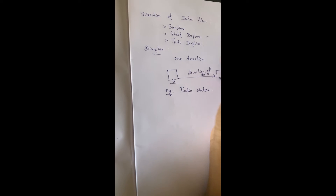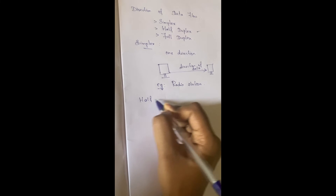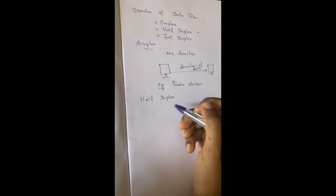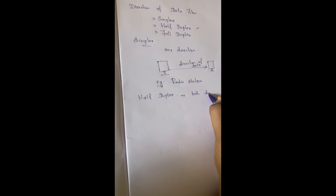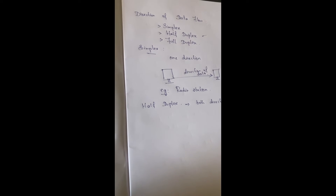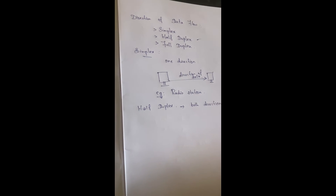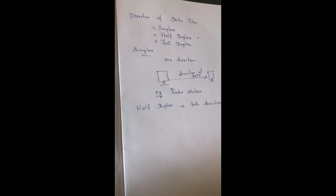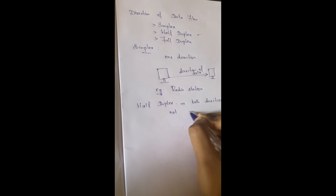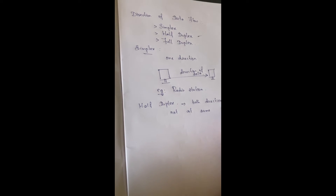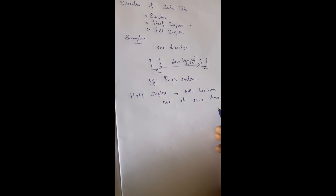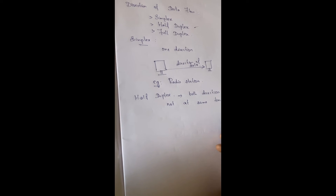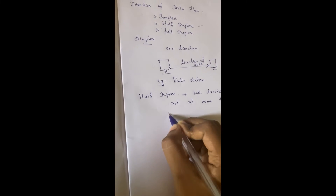Next one is half duplex. In half duplex, data can be transmitted in both directions, but it cannot transmit at the same time. The data can be transmitted in both directions but not at the same time. The example for half duplex is walkie-talkie.